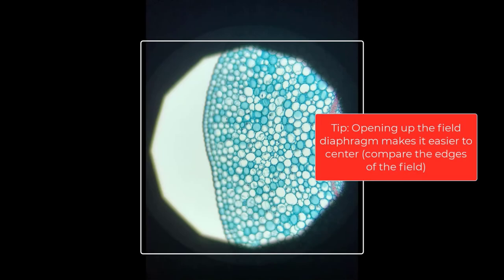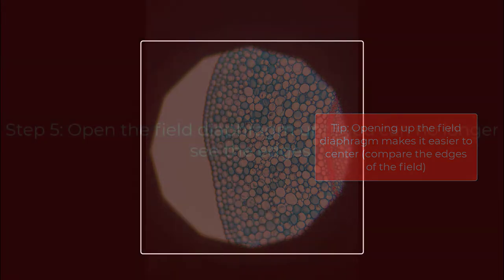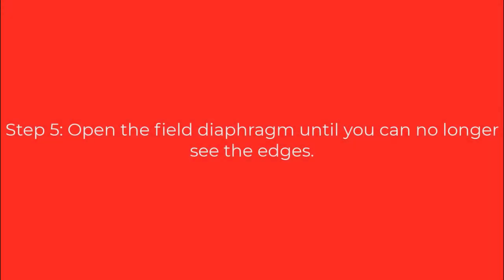As a tip, you can open up the field diaphragm just so that it's right inside the field of view, and then you can use the edges to center your field diaphragm. Step 5 is to open the field diaphragm until you can no longer see the edges.